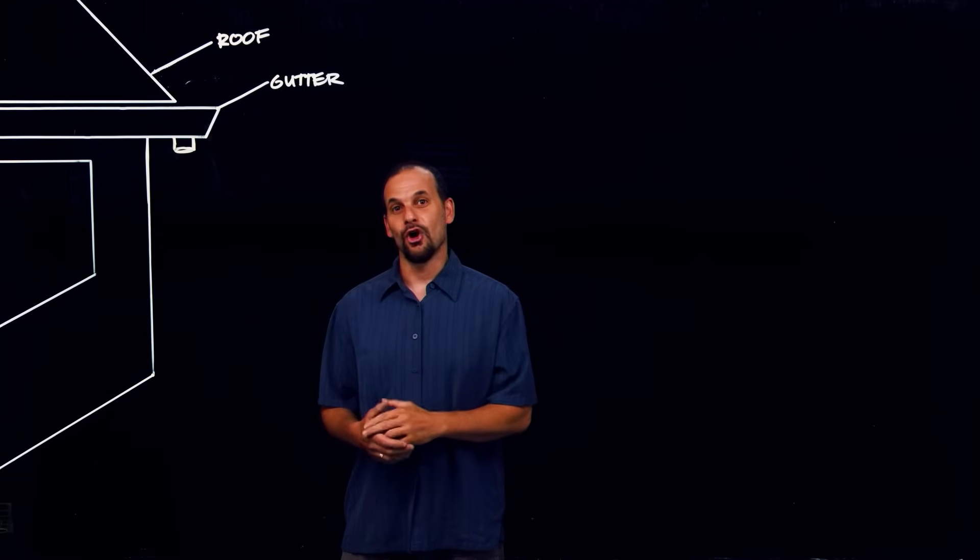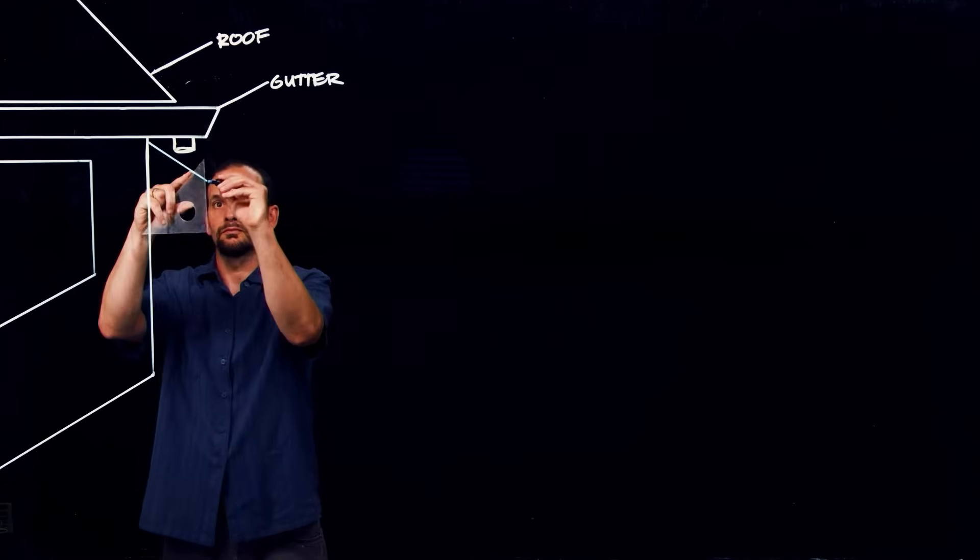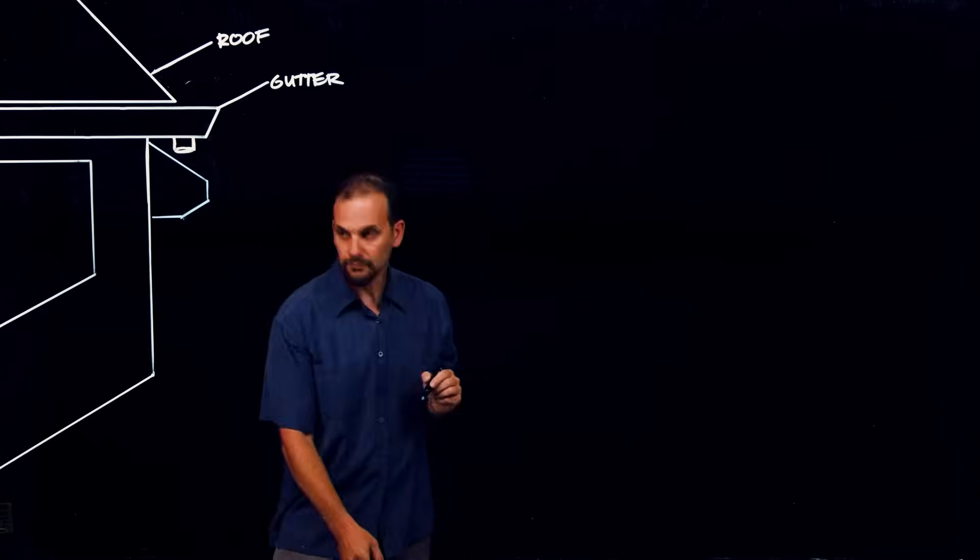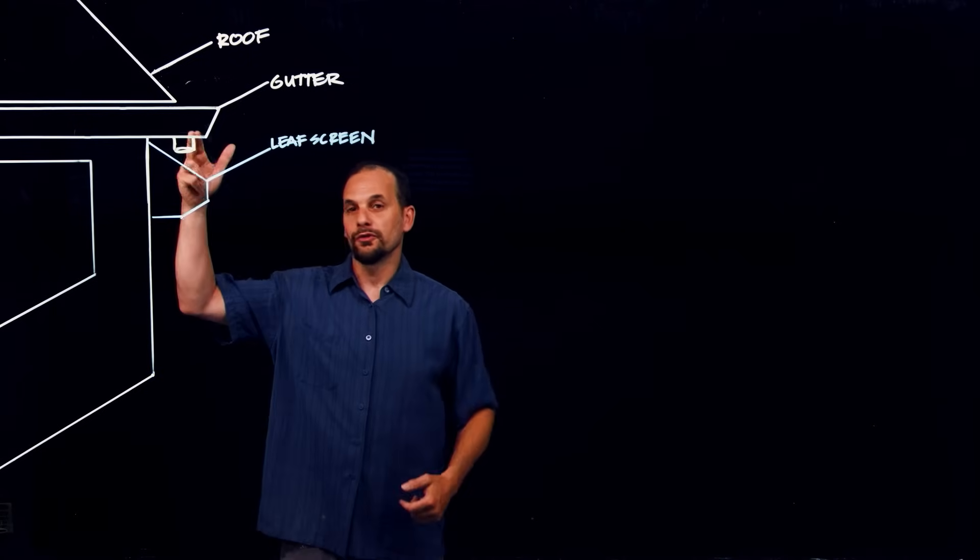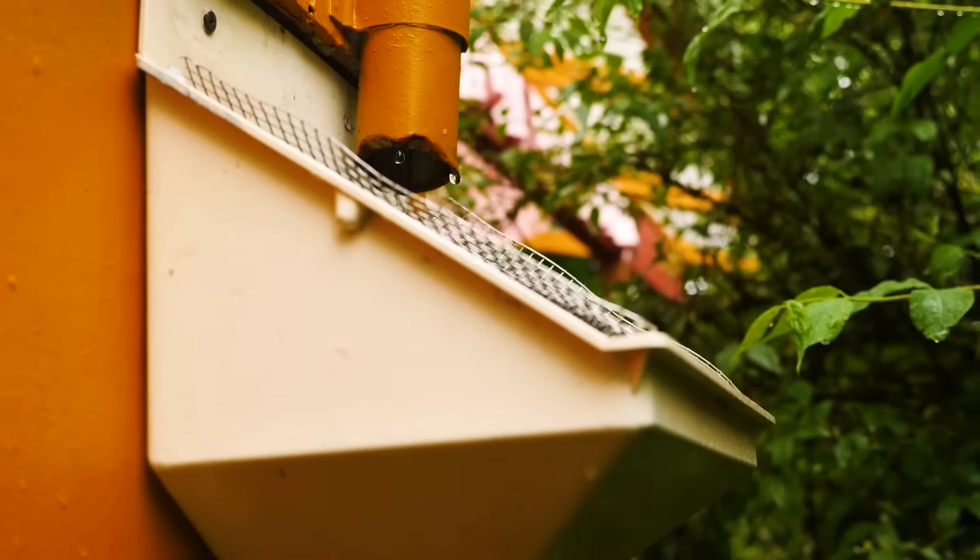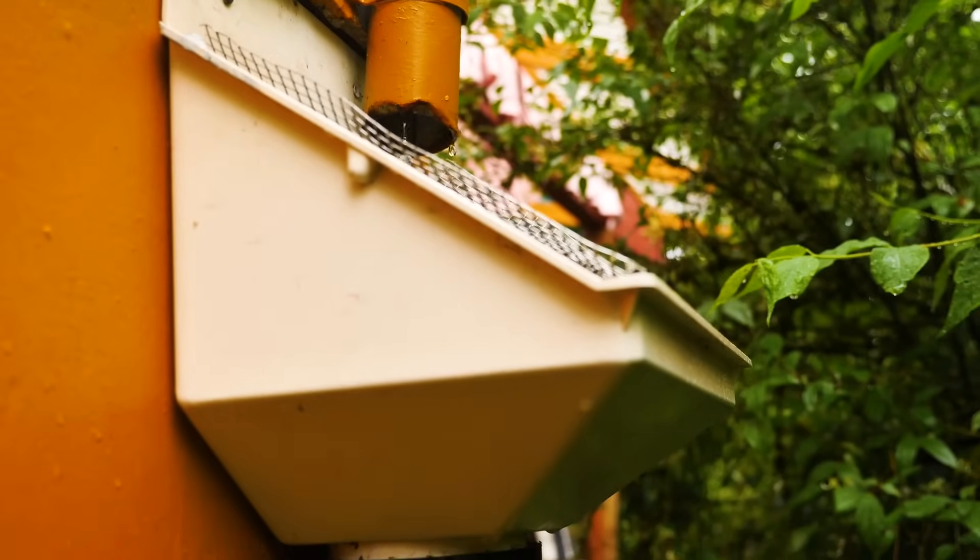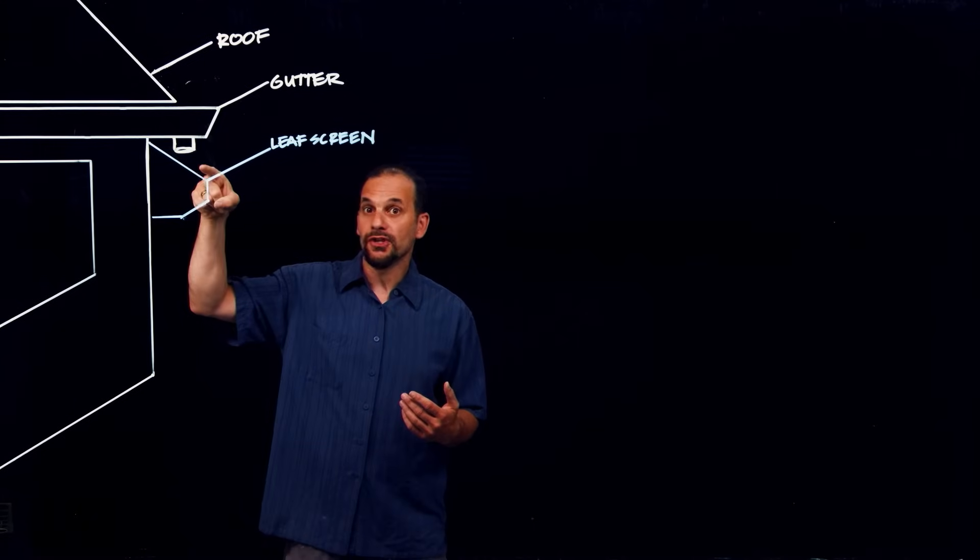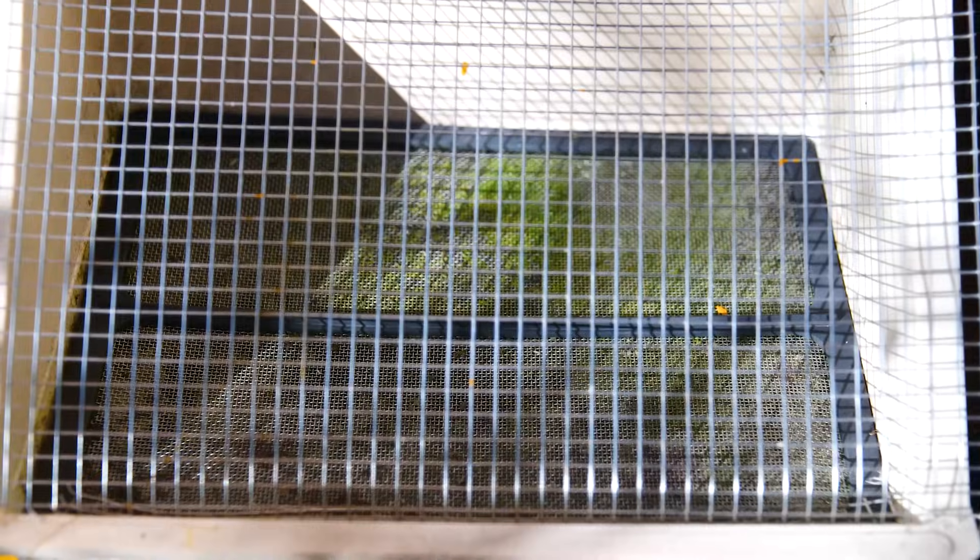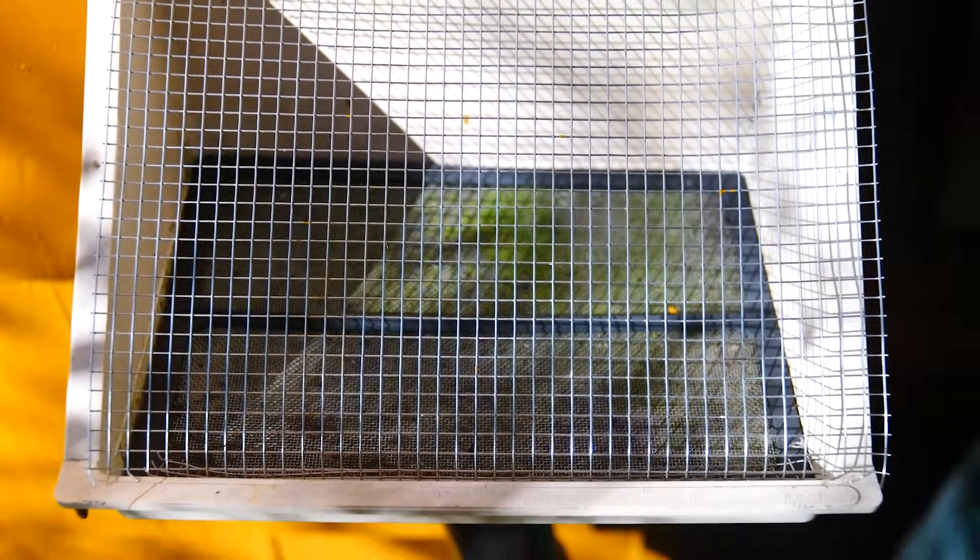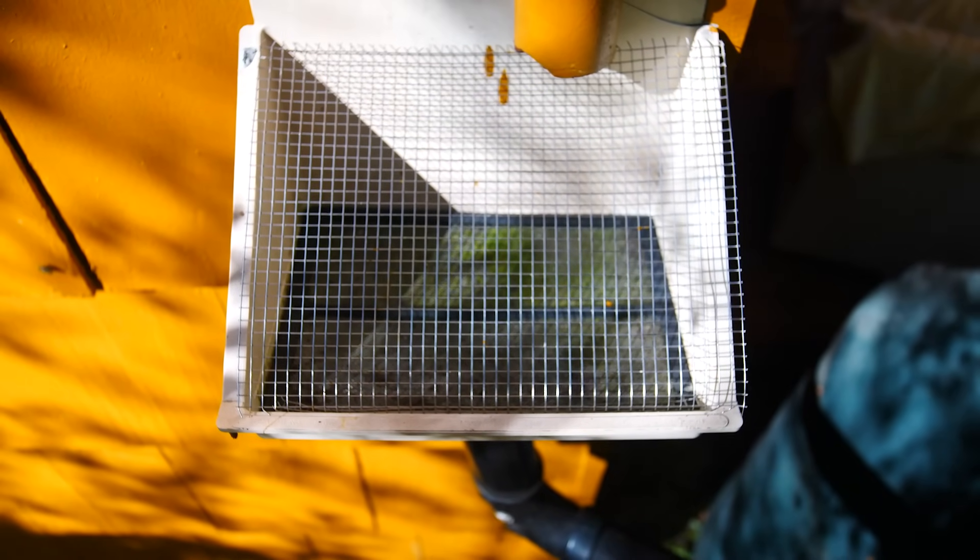There's this great invention called a leaf screen that's made specifically to keep leaves and other debris out of your water system. So, the water flows from this downspout and hits this screen that's positioned at an angle. The big debris falls off the steep angle as water passes through. And then inside, there's another finer screen where small particles are filtered.